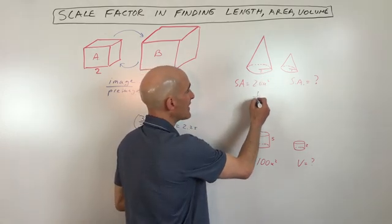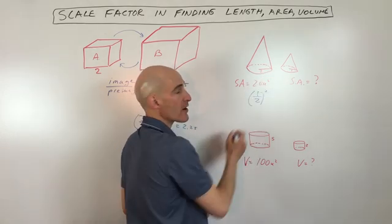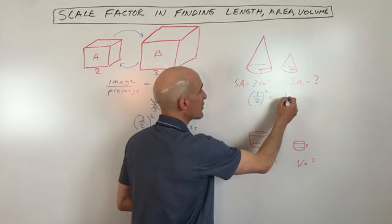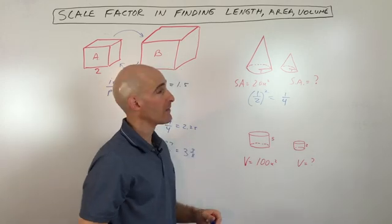But what I want to do is I want to take that scale factor and I want to square it because we're comparing the areas, right? So two-dimensional. So that means that the ratio of the areas is going to be 1 to 4.